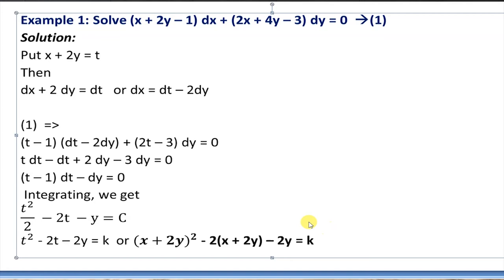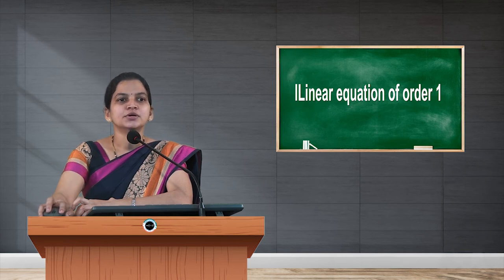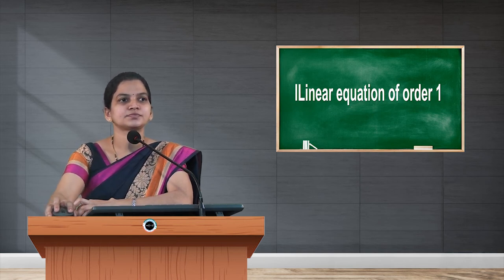Now back-substituting t = x + 2y, we get (x + 2y)² - 2(x + 2y) - 2y = C. This is the required general solution of the given differential equation. We will now solve one more example.